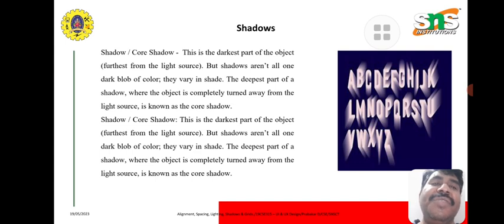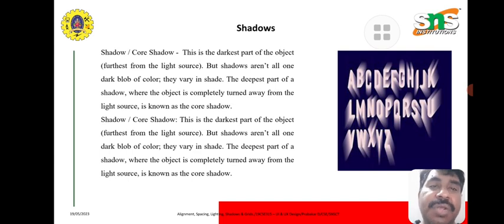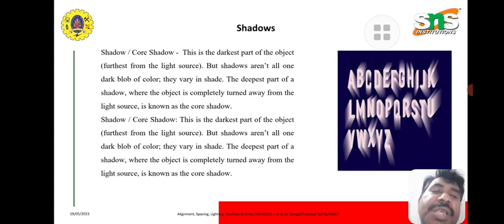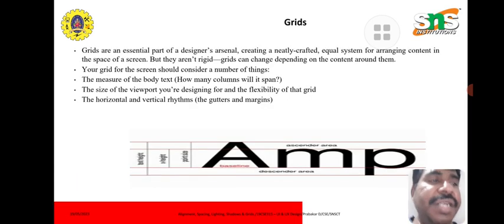Shadows — the core shadow is the darkest part of the object, furthest from the light source. Shadows are not all one dark block of color; they vary in value. The deepest part, which is the darkest part of the shadow, is known as the core shadow.